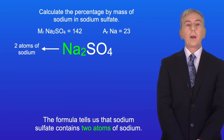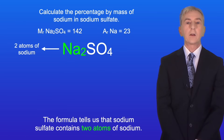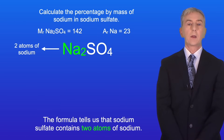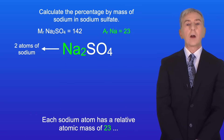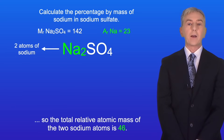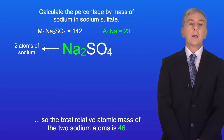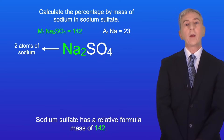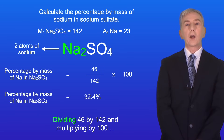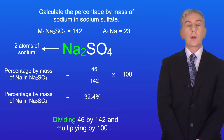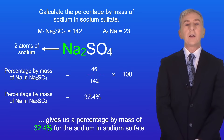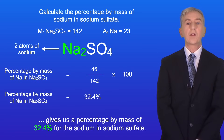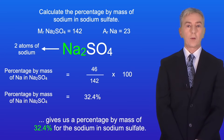The formula tells us that sodium sulfate contains two atoms of sodium. Each sodium atom has a relative atomic mass of 23, so the total relative atomic mass of the two sodium atoms is 46. Sodium sulfate has a relative formula mass of 142. Dividing 46 by 142 and multiplying by 100 gives us a percentage by mass of 32.4% for the sodium in sodium sulfate.